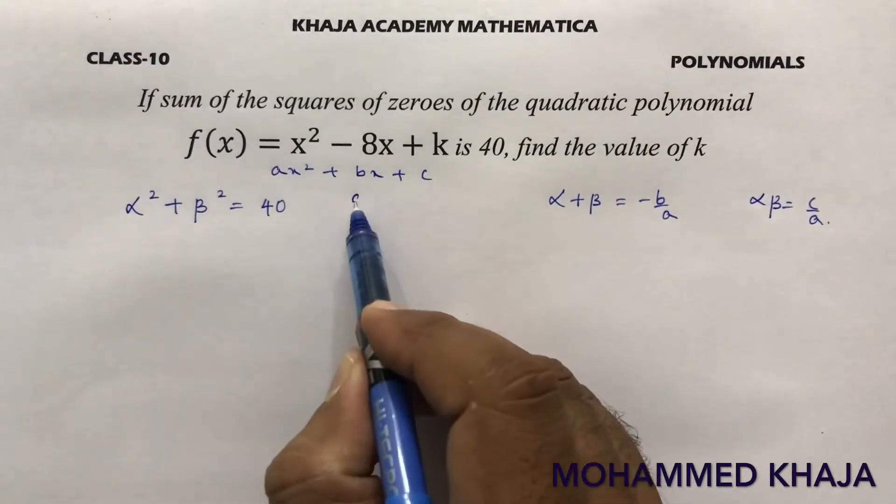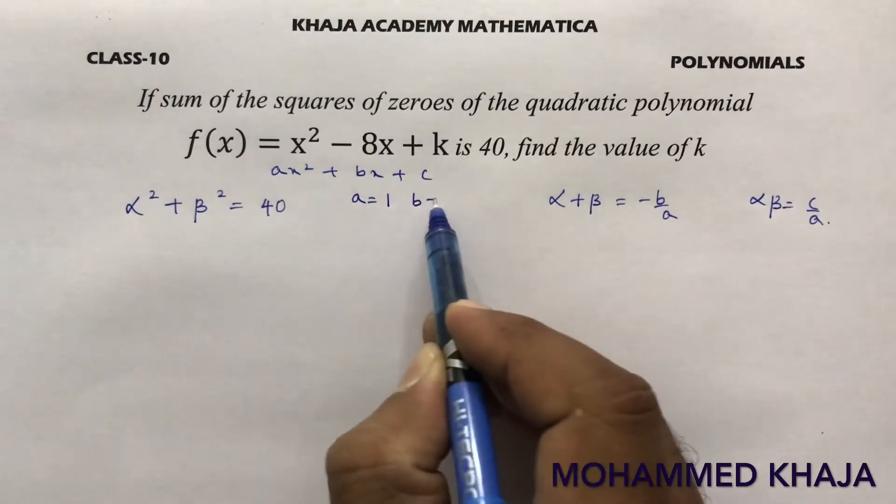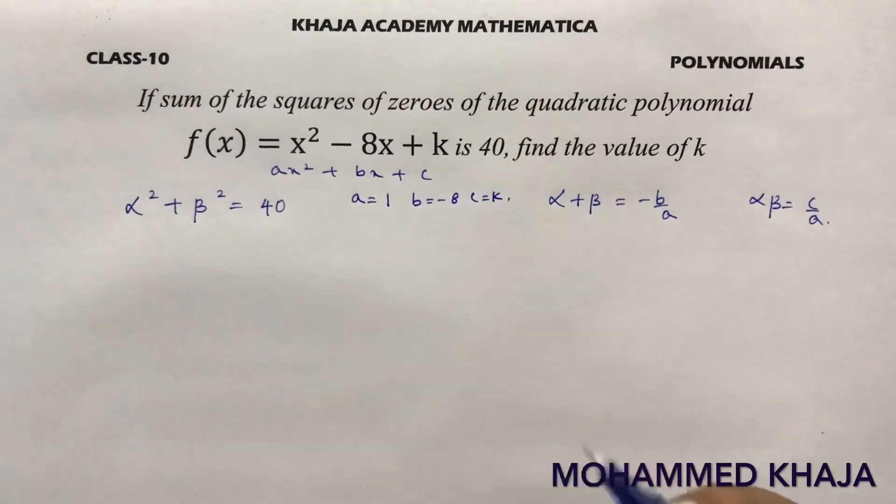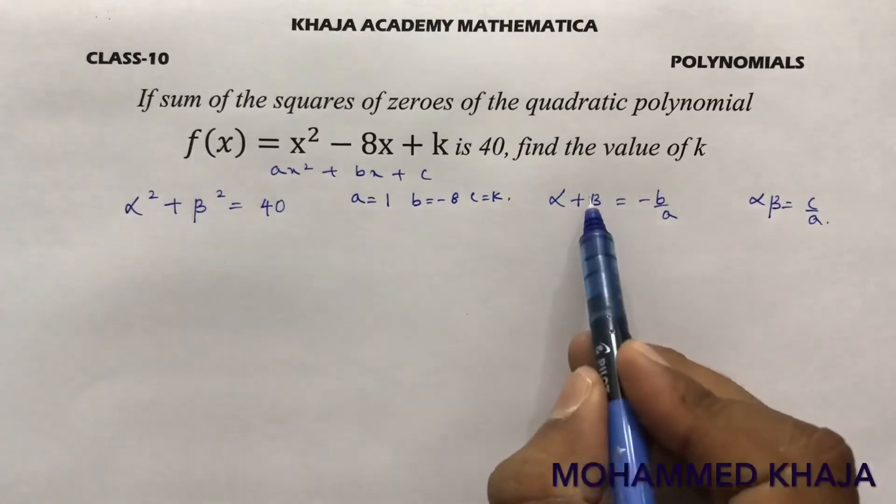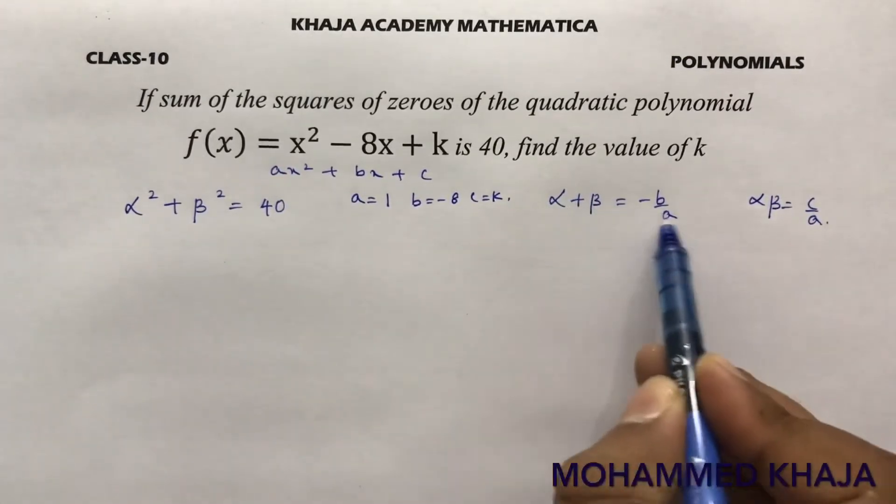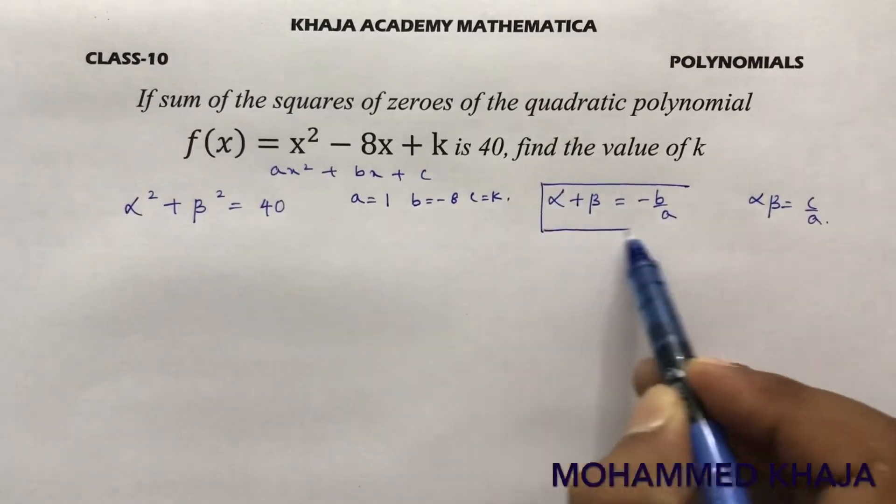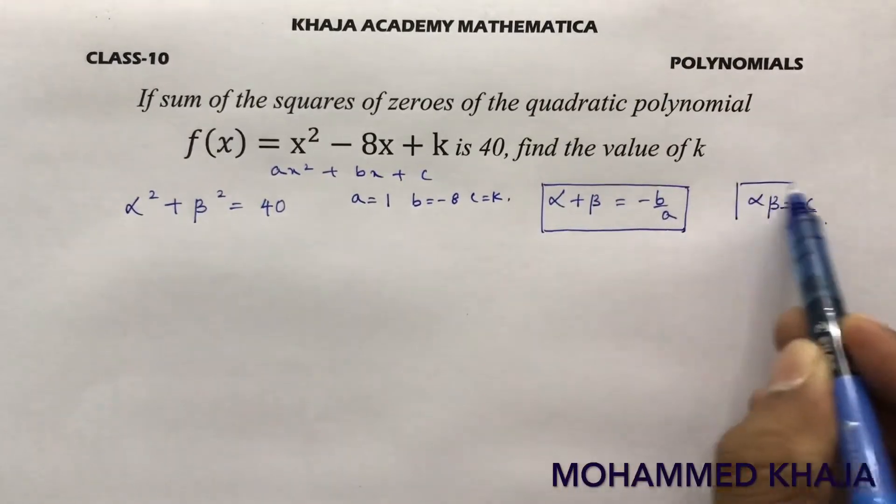So if we compare, the value of a is 1, b is -8, c is k. Now see directly I cannot find. So with the help of this relation alpha + beta = -b/a, this formula, and alpha * beta = c/a.